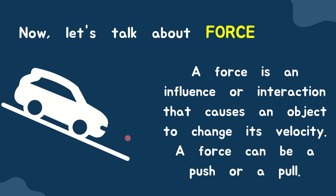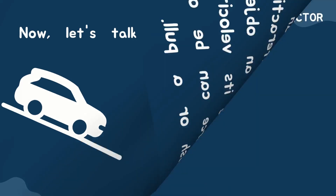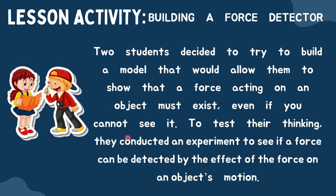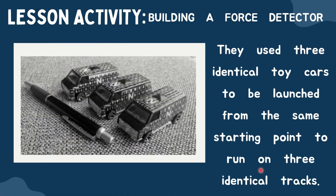Let's talk about force. When we say force, it is an influence or interaction that causes an object to change its velocity — a force can be a push or a pull. The title of our activity is Building a Force Detector. Two students decided to build a model to show that a force acting on an object must exist, even if you cannot see it with the naked eye. They used three identical toy cars launched from the same starting point on three identical tracks.